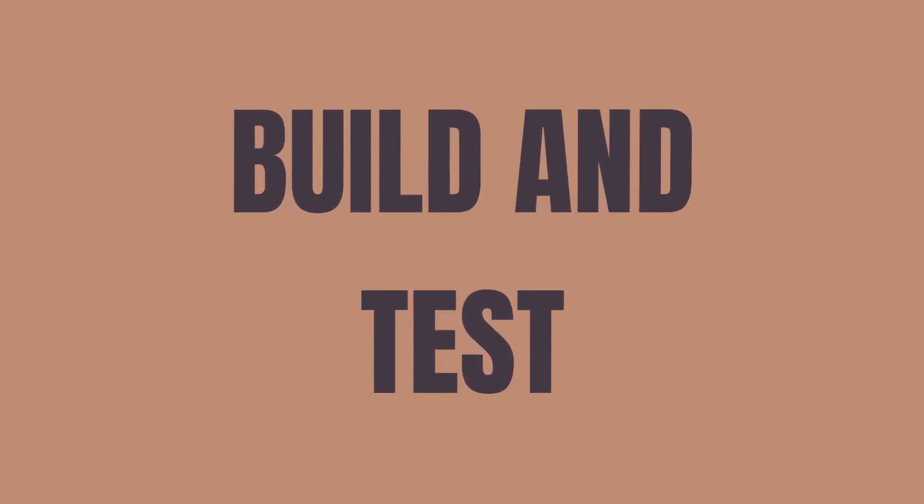Continuous integration refers to the build and unit testing stages of the software release process. Every revision that is committed triggers an automated build and test. And with continuous delivery, code changes are automatically built, tested, and prepared for release to production. That's our introductory video on Fastlane.